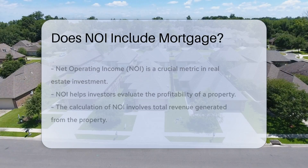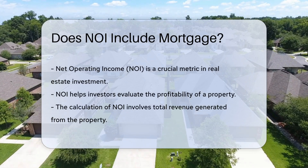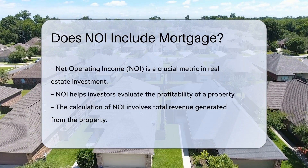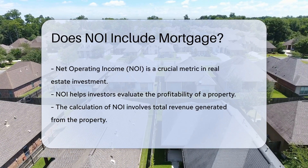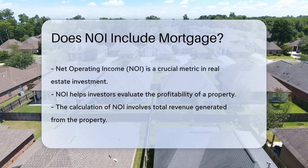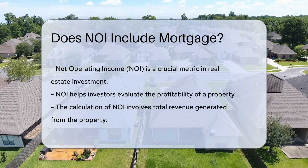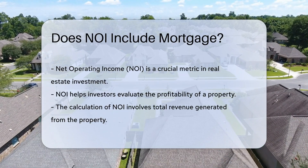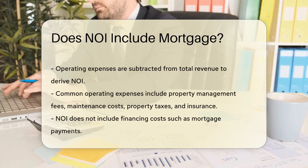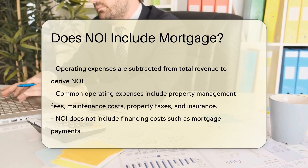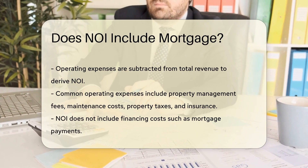Net Operating Income, or NOI, is a key metric in real estate investment. It helps investors evaluate the profitability of a property. NOI is calculated by taking the total revenue generated from the property and subtracting operating expenses. Operating expenses typically include costs such as property management fees, maintenance, property taxes, and insurance.